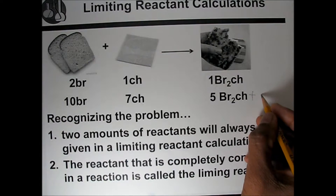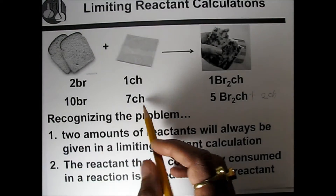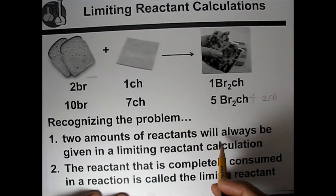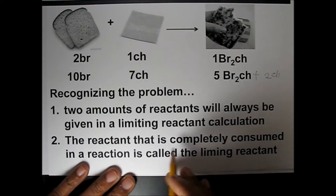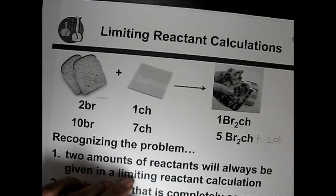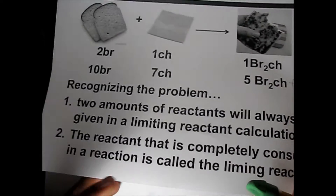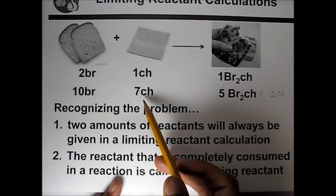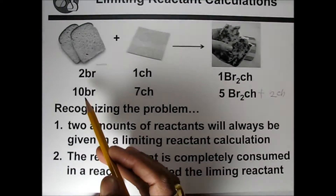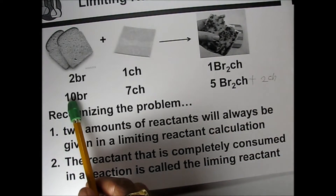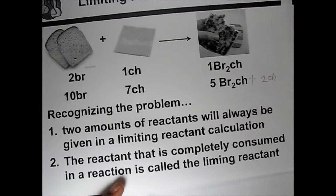The limiting reactant here is bread, because bread is completely consumed and two cheese still remain. So bread is the limiting reactant. Recognizing the problem: the amounts of both reactants will always be given in limiting reactant calculations, and the reactant that is completely consumed in a reaction is called the limiting reactant. Even though ten seems like a bigger number, it required two breads per sandwich.